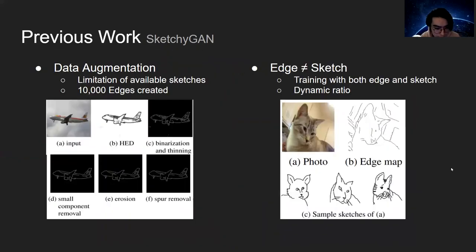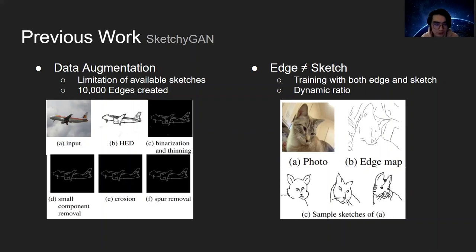Nevertheless, SketchGAN points out the solution for the problem of lack of sketch data, as shown in the left figure, which is to create edge maps from real images. SketchGAN also highlights the key difference between the edge map and sketch, shown in the right figure, and suggests using a dynamic ratio of edge and sketch to train the model.